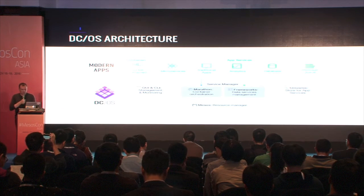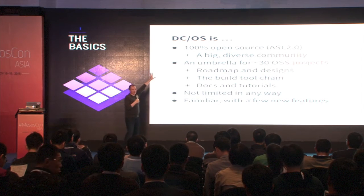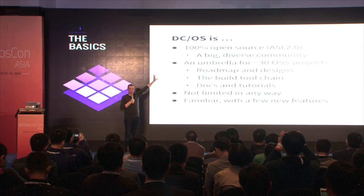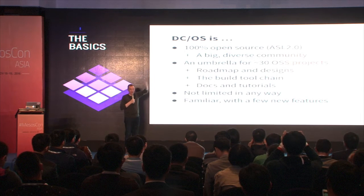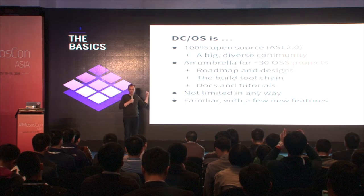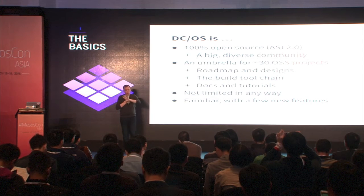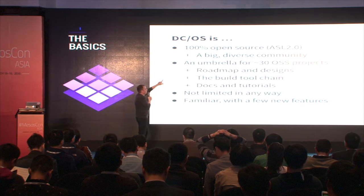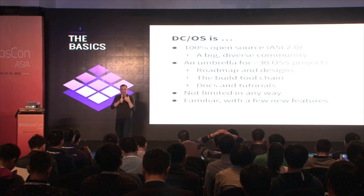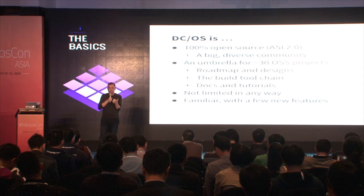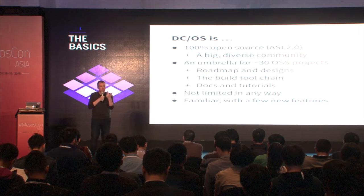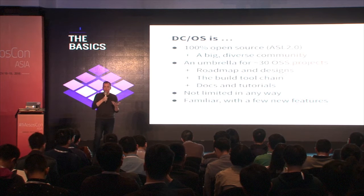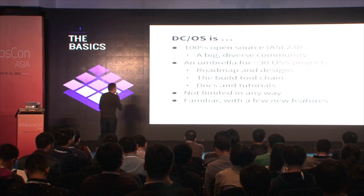So what does that mean? DCOS, first and foremost, is 100% open source — that's really important. It's a project that we wanted to make sure everyone could participate in. We took everything needed in that architecture box and made sure all of it was open source. It's about 25 different components that we bundle together, giving us a single roadmap, a single set of documentation, tutorials, and examples for helping you make your DCOS cluster run.